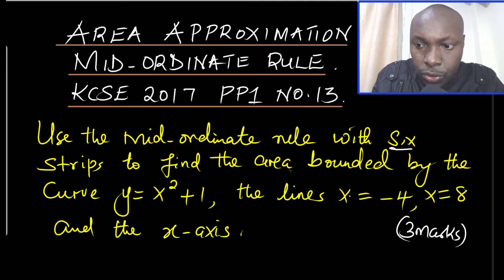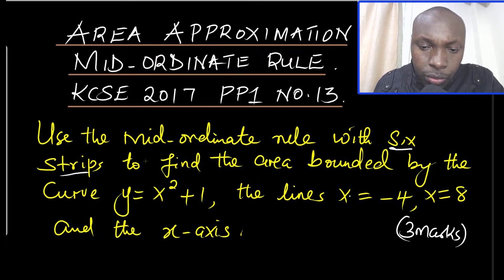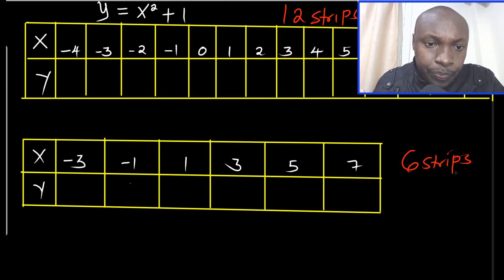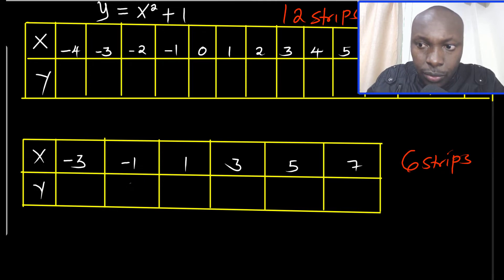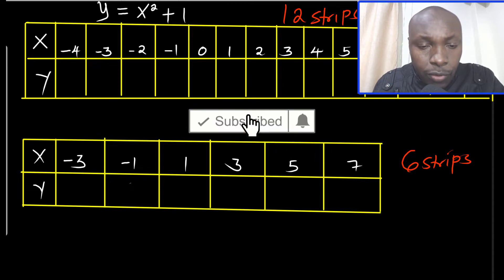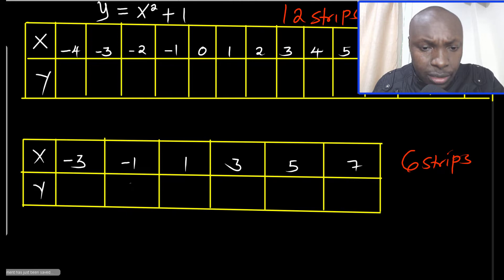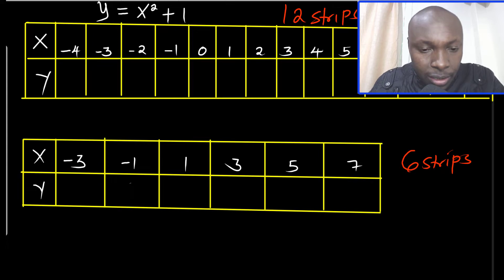You're supposed to use the mid-ordinate rule with six strips. The first thing you're going to do is have a table of values for the function y = x² + 1, beginning from x = -4 to x = 8. When you prepare this table of values from -4 all the way to 8, you end up with 12 strips, but you're required to get six strips. That is why I've prepared a second table where I've extracted the x-coordinates that will give me six strips.